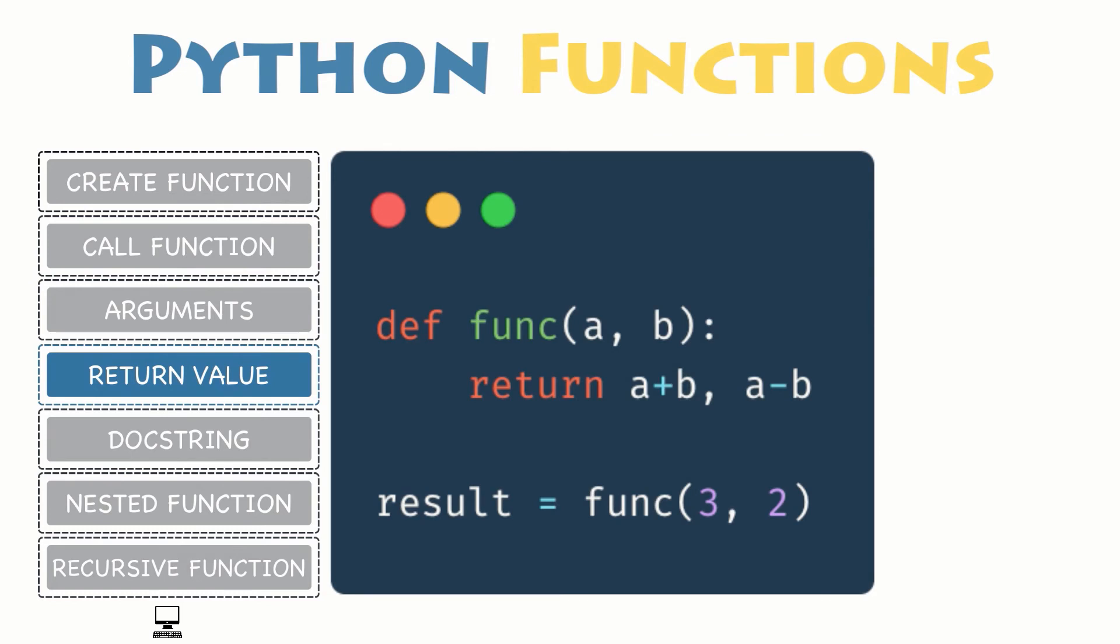Python also has the ability to return multiple values, something missing from many other languages. Fortunately for you, you can simply do this by separating return values with a comma. For instance, this function will return both the addition and the subtraction of two variables.